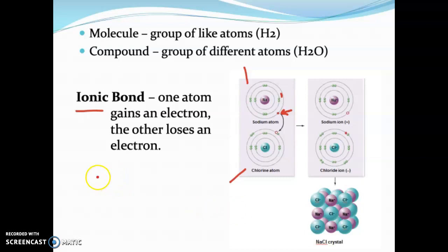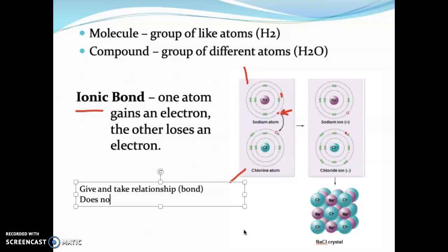So ionic bond is a give and take type of bond. So give and take relationship or bond. It doesn't have great bond strength because it's a give and take scenario. But it's enough to hold sodium and chloride together creating sodium chloride table salt. Think about what happens when you put that in water.